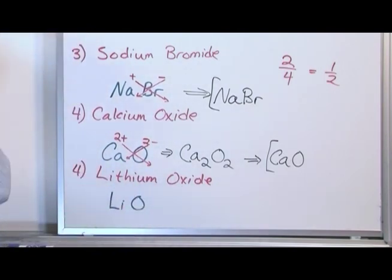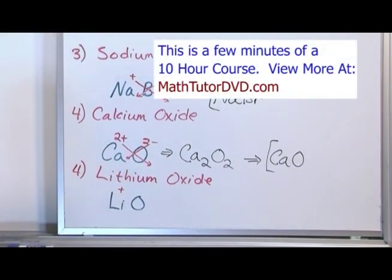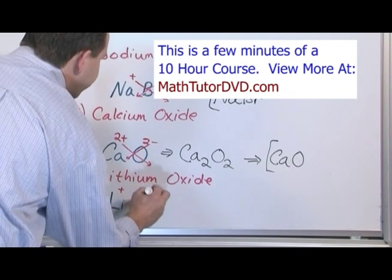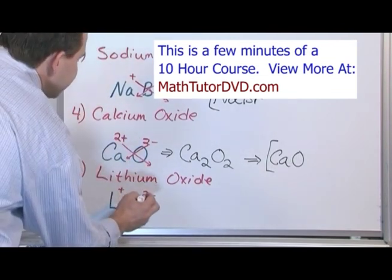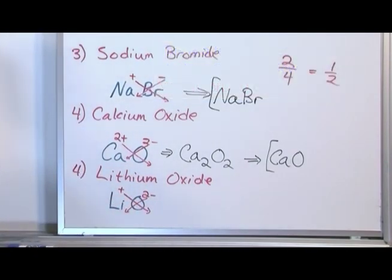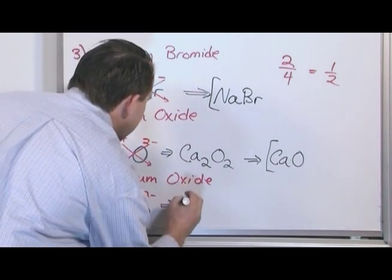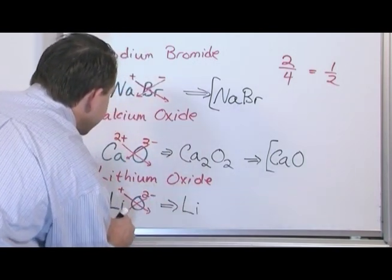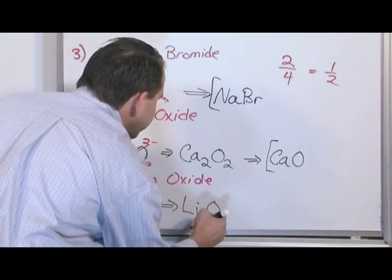What are the charges on lithium? If you look at lithium in the periodic table, it has a +1 charge. Oxygen has a -2 charge. You drag this 2 down here and this 1 down here, then the resulting compound is Li2O1.